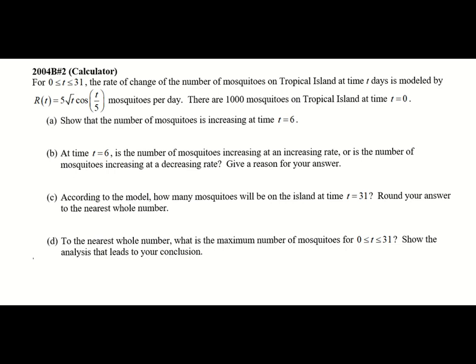Today we are going to cover AP review topic number three, which is called Contextual Questions, Accumulating Rates of Change. We are going to begin with a calculator problem. If you glance through this packet, all the questions are calculator questions today, and there are actually a total of seven because this is a very highly tested topic and it is most usually found on the calculator section of the exam.